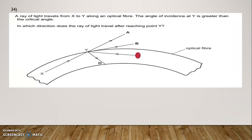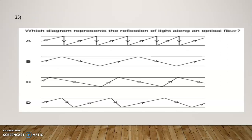Question Number 34: A ray of light travels from X to Y along an optical fiber. The angle of incidence at Y is greater than the critical angle. In which direction does the ray travel after reaching point Y? The correct option is C. Question Number 35: Which diagram represents the reflection of light along an optical fiber? Option B represents that — it shows total internal reflection along the optical fiber.